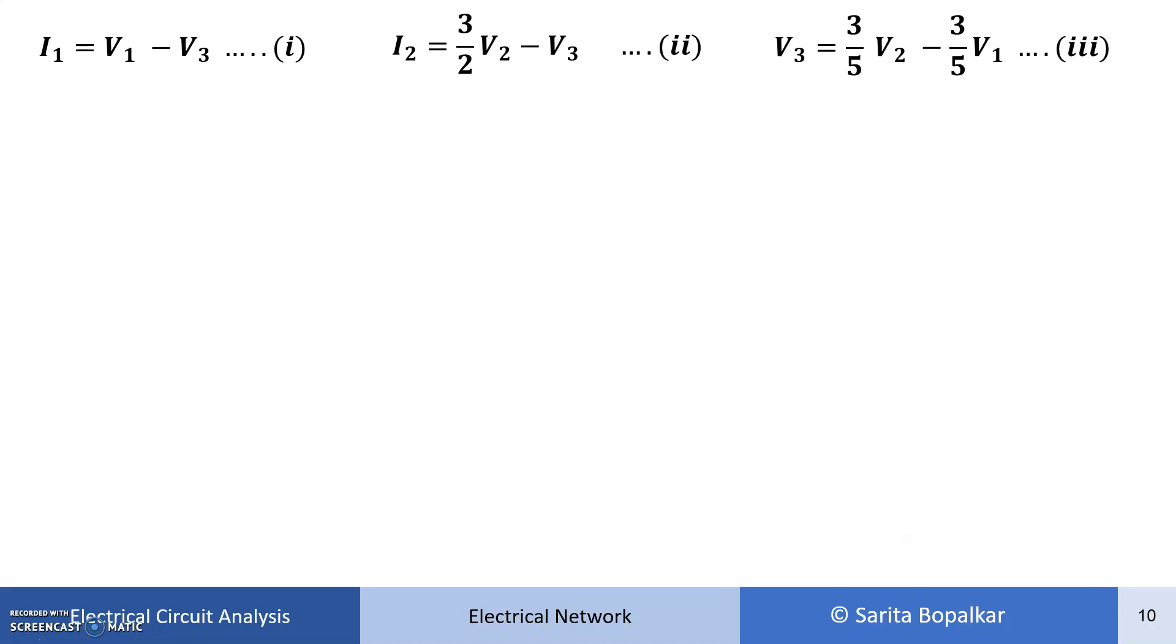These are our three equations. We will substitute equation 3 in equation 1. So this is our equation 1. We substitute V3 from equation 3 here. Now combine the terms V1 and V2. So this is our equation: I1 is a function of V1 and V2.